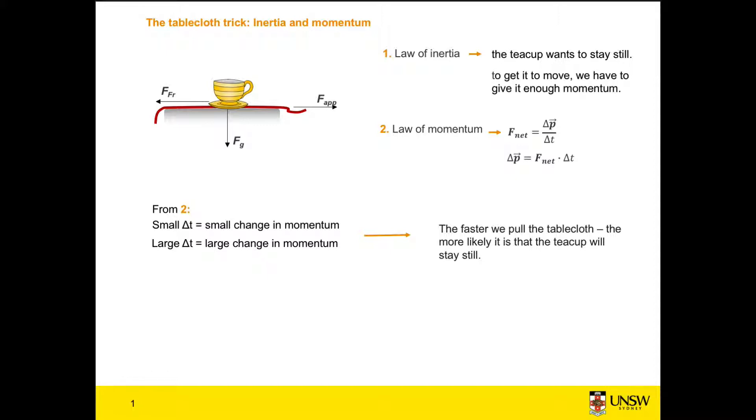The second part of this trick is how much force should we be applying to the tablecloth, and the answer to that one is just enough to overcome the friction. So we know that we want our net force to pull the tablecloth out, and for our net force to be in the right direction it has to be greater than friction.